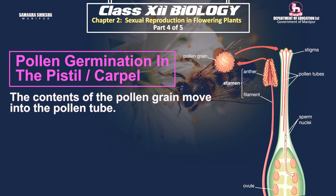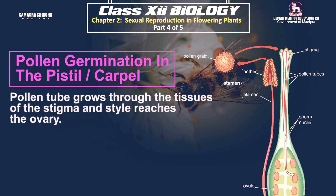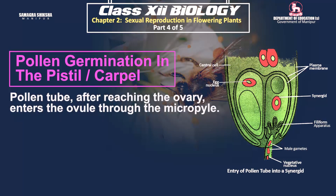The pollen tube contains the contents of the pollen grain. The pollen tube grows through the stigma and style tissue. In the pollen grain, there are two cells that are transferred. These two cells are generated as two different cells within the pollen tube.